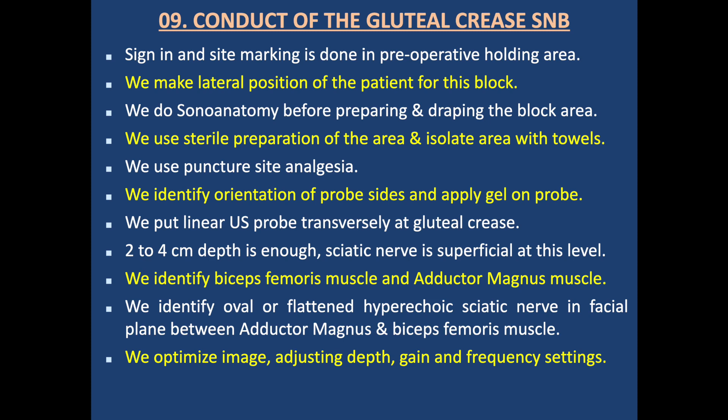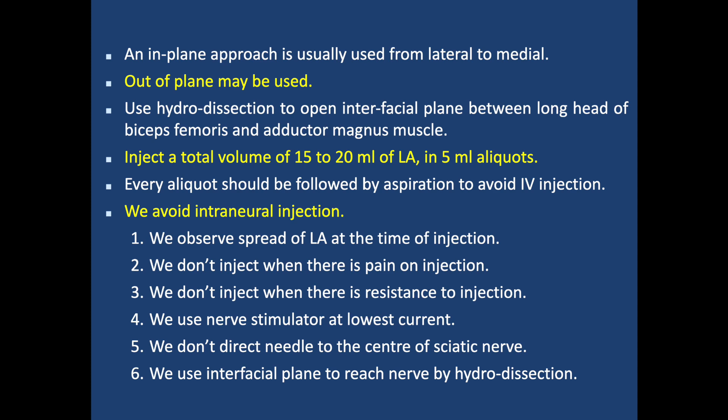Conduct of Gluteal Crease Sciatic Nerve Block: Sign-in and site marking are done in the holding area. We make the patient lateral or prone. We do sonoanatomy before preparing and draping. We use sterile preparation and isolate the area with towels. We use puncture site analgesia. We place a linear ultrasound probe transversely at the gluteal crease. At 2–4 cm depth, the sciatic nerve is superficial at this level. We identify biceps femoris and adductor longus muscles, and the oval hyperechoic nerve in the fascial plane between adductor magnus and biceps femoris muscle.